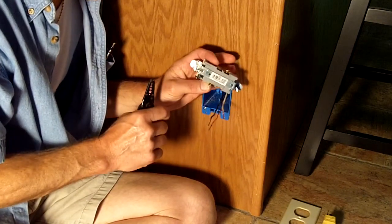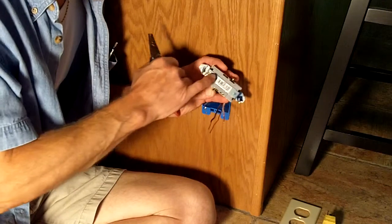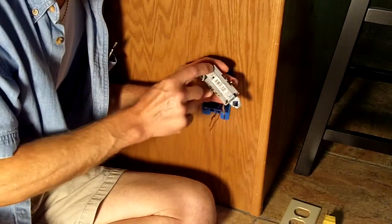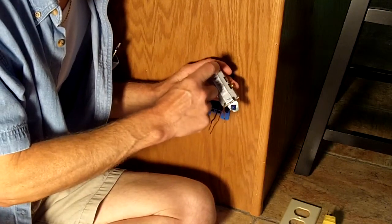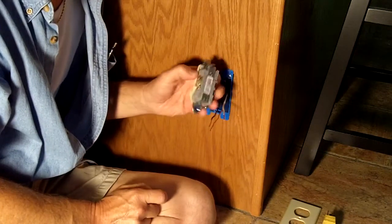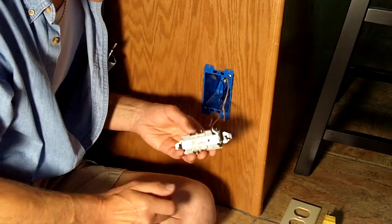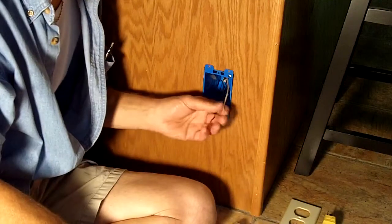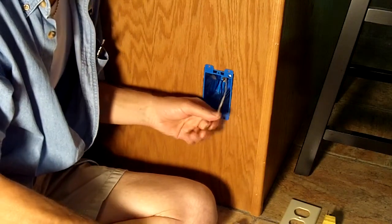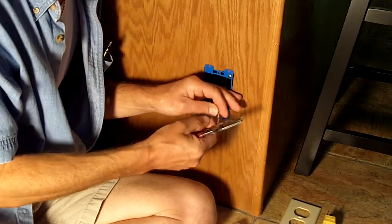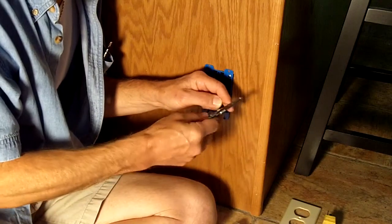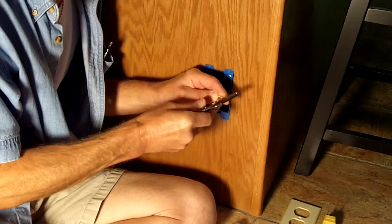On the back of the receptacle device molded right into the plastic is a strip gauge. It tells you how much insulation to strip off for a proper termination. You should use that for a reference. Once you've done this a few times you can pretty much just estimate it and you'll be fine.